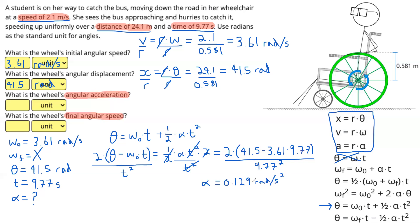When I calculated that value, I saved my previous calculations in my calculator and used those unrounded numbers to get the most accurate result. If I had put in just the rounded values, I would have gotten a very slightly different number. That will still be graded correctly on Positive Physics because it's within the tolerance range. However, for the highest possible accuracy, anything already calculated should be saved in your calculator and used in later equations. Our angular acceleration is 0.129 radians per second squared.